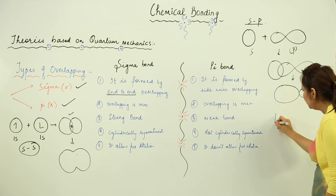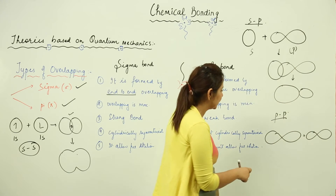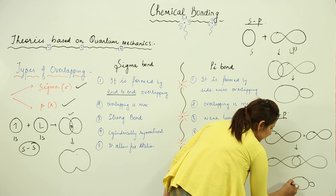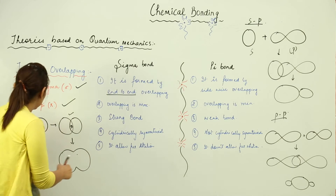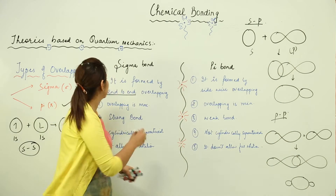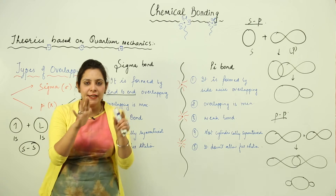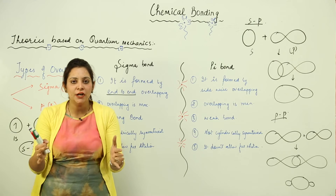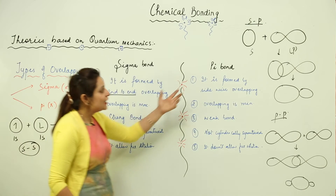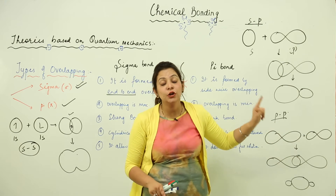Another combination is between p and p orbitals. When both p orbitals are symmetrical around the internuclear axis, they combine end-to-end, resulting in one big electron cloud and two small ones. In all three cases — s-s, s-p, and p-p — the overlapping is end-to-end, and this results in the formation of a Sigma bond. The p orbitals involved must be symmetrical around the internuclear axis.